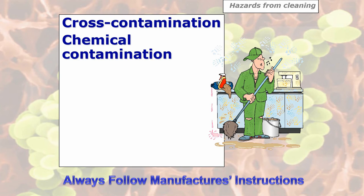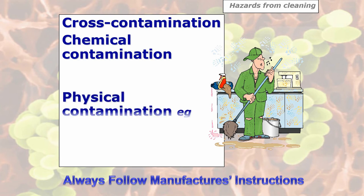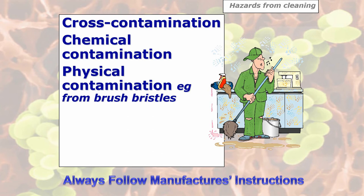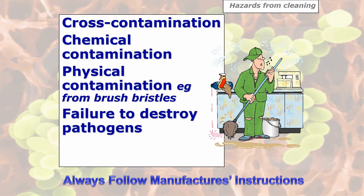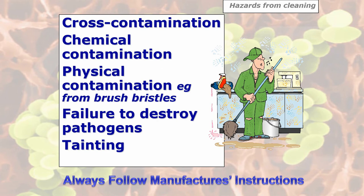Chemical contamination is another hazard — cleaning chemicals getting into food. You've also got physical contamination: brush bristles, mop filaments, bits of cloth going into food. There's also failure to destroy pathogens — if you're using a sanitizer that needs to be diluted, you must dilute it to the correct level; if it's under or over diluted it won't destroy pathogens. Also ensure it's within date, as past its best before it's particularly useless at bringing bacteria to a safe level. And tainting — a strong odour product could taint food products as well.